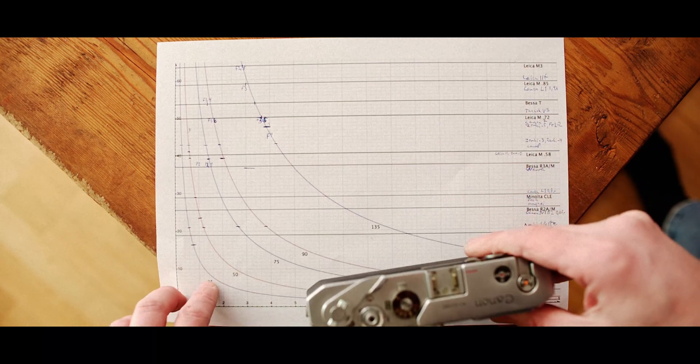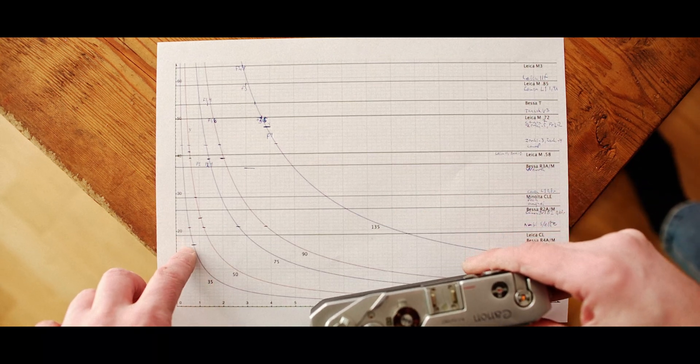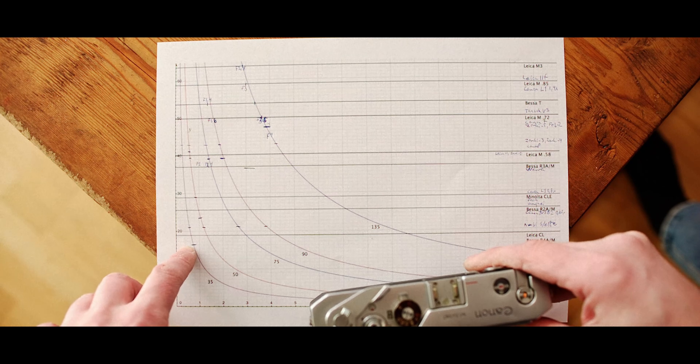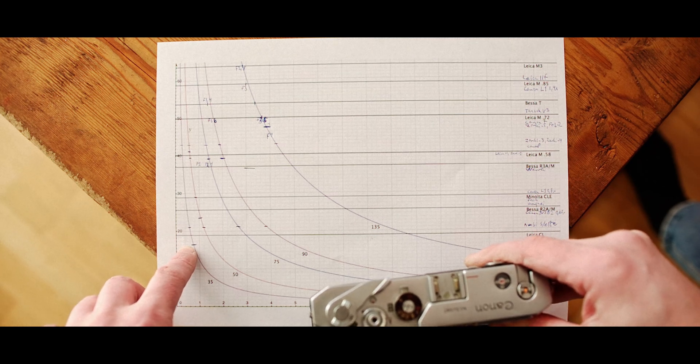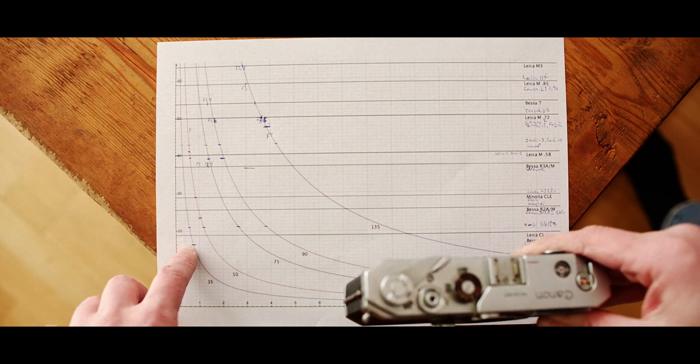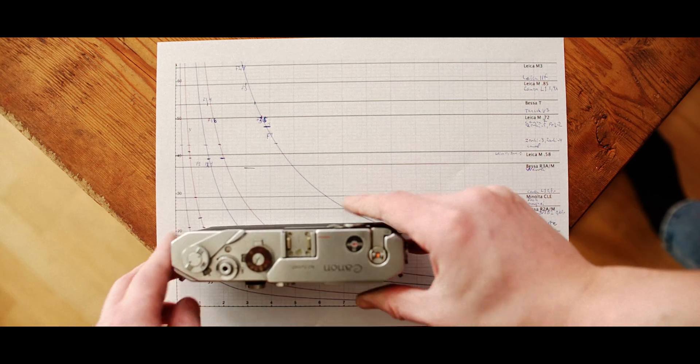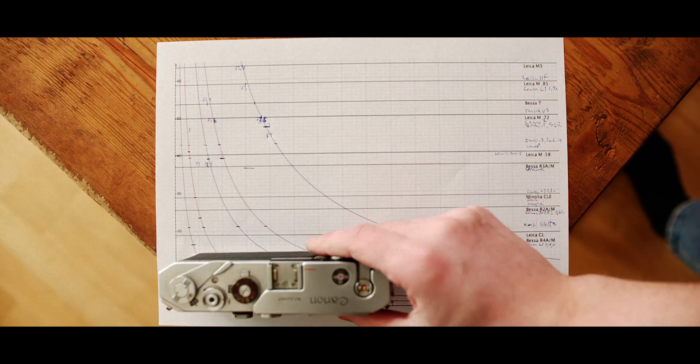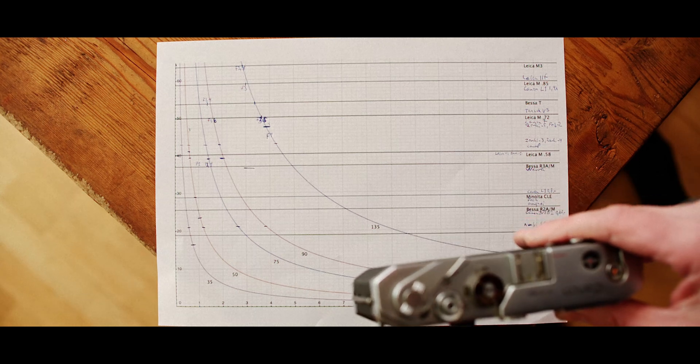And for a 35 millimeter lens according to this graph it would be possible to focus a 35mm f/0.8 lens at wide open with this base length. Not a big problem then. If we move on.